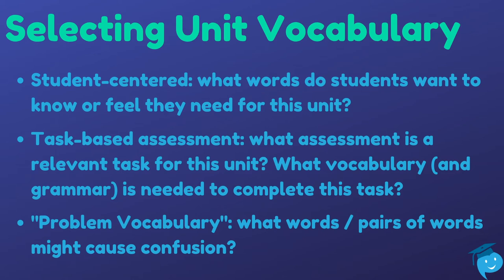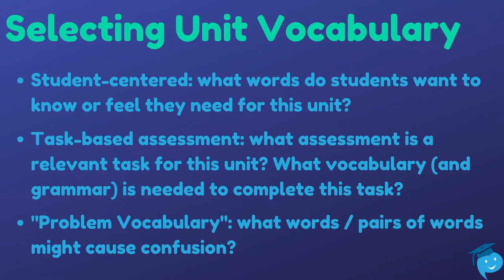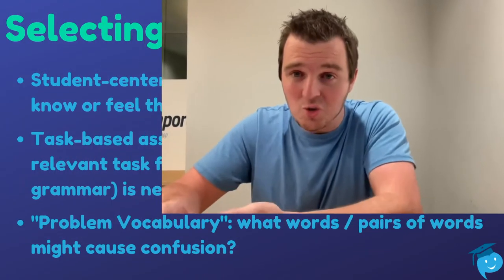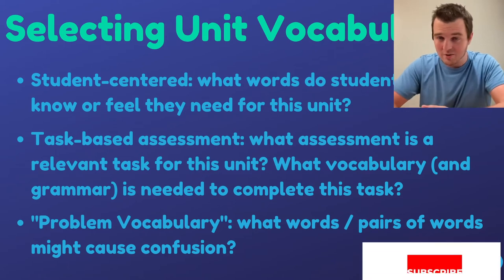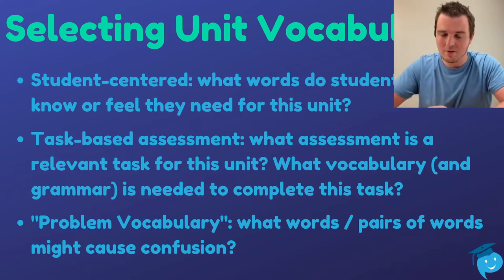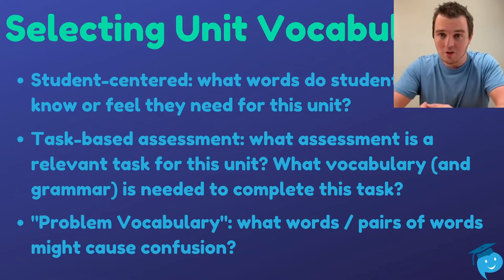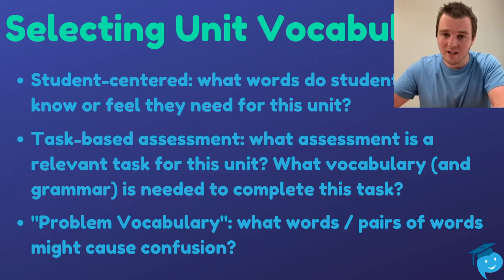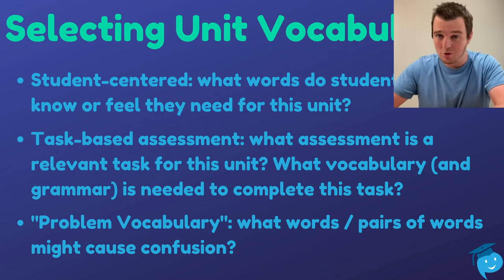The second consideration is task-based assessment, using a backwards design approach. Ask: what's my end goal? What do I want students to do with this language? For a hobbies unit, you might want them to talk about a hobby, explain why they have it, and convince someone to join them — that could be the task. You then think about what vocabulary and grammar students need to complete that assessment, front-load those items, teach them, and once students have had sufficient repetition and exposure, they acquire the language and can use it in the final assessment.